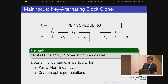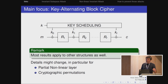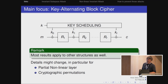I'm mainly focusing on key-alternating ciphers. I'm talking about block ciphers where you have a round function and XOR in between with the round keys. I think many of these ideas carry over to other scenarios as well — for example, partial nonlinear layers, Feistel structures — and also to cryptographic permutations. I'm also not focusing too much on tweakable ciphers, but there too it's possible to adapt many results.